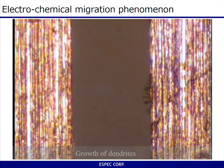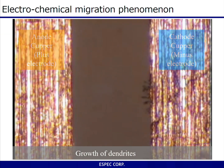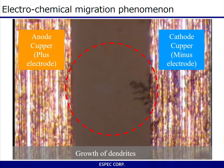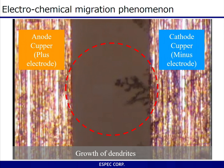This video shows the onset of electrochemical migration between electrodes. Water is dropped between the copper electrodes, and a voltage is applied to accelerate the migration process. This method is called the water drop test and is a simple method used to determine whether a substrate is good or bad.